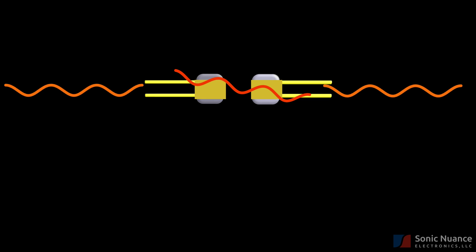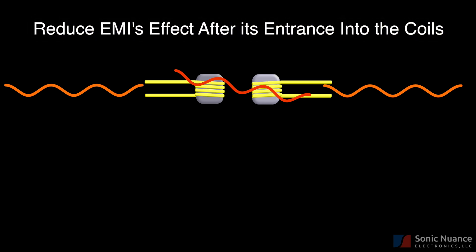Let's remove our shields from the diagram and discuss the other way to prevent EMI's effect. And this is done after they enter the pickup coils. This is done with what we'll call humbuckers. They're humbucking pickups.